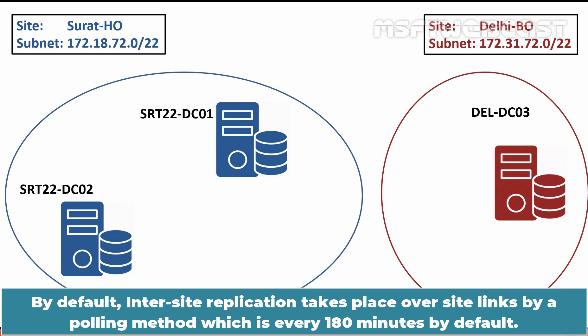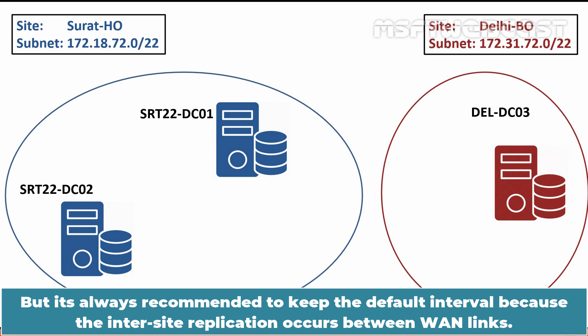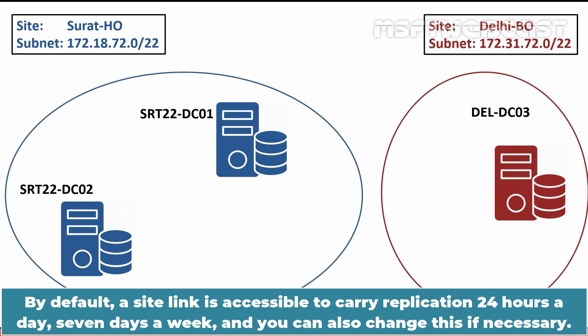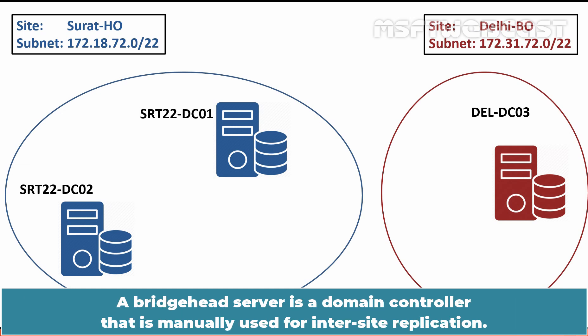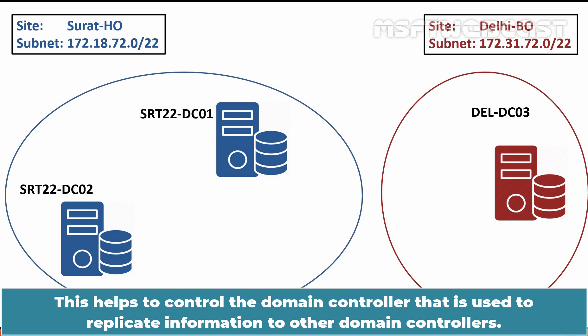Active Directory preserves bandwidth between sites by minimizing the frequency of replication and by allowing you to schedule the availability of site links for replication. By default, intersite replication takes place over site links using a polling method every 180 minutes. You can modify this interval down to 15 minutes, but it is recommended to keep the default since reducing the interval could cause high network traffic and latency on WAN links. By default, a site link is accessible for replication 24 hours a day, 7 days a week. You can configure a bridgehead server for every site created for each intersite replication protocol, which helps control which domain controller replicates information to other sites.